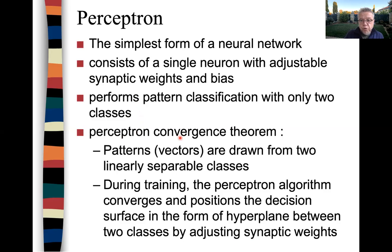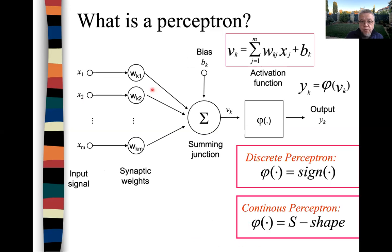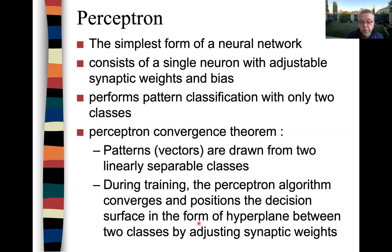For the perceptron convergence theorem, the patterns or vectors are drawn from two linearly separable classes. During training, the perceptron algorithm converges and positions the decision surface in the form of a hyperplane between the two classes by adjusting the synaptic weights. So after training, you should have a decision boundary which is a hyperplane between the two classes.